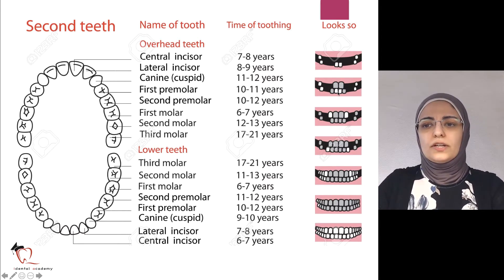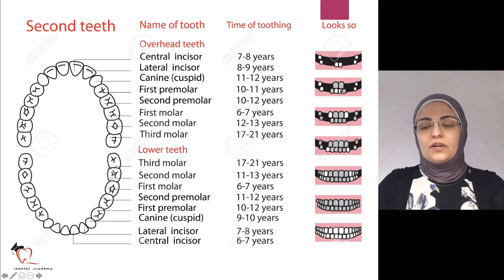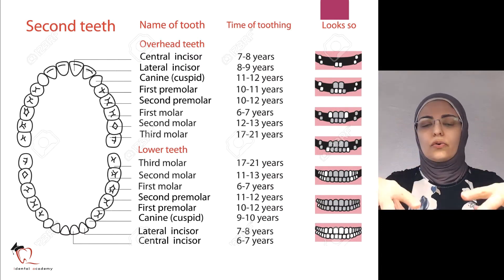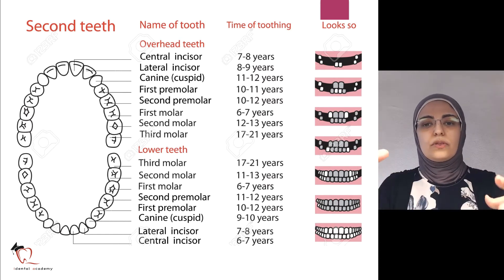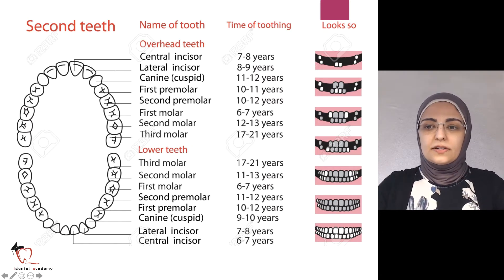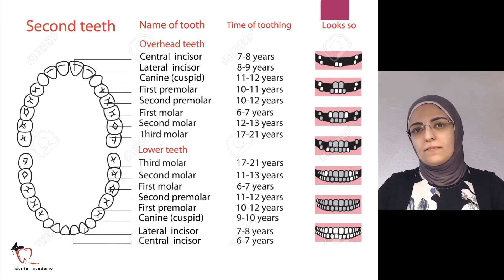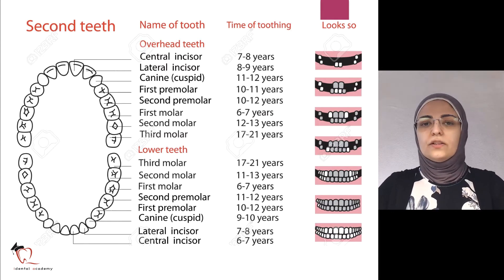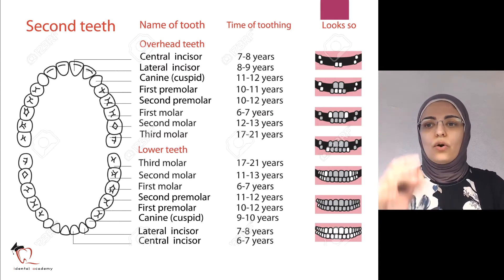Between ages seven and eight we usually get the lower laterals and upper centrals. Around eight to nine we get the upper laterals. Then the patient will get a pause of around two to three years where they don't change any more baby teeth — sometimes parents come in concerned, not knowing this pause is normal.